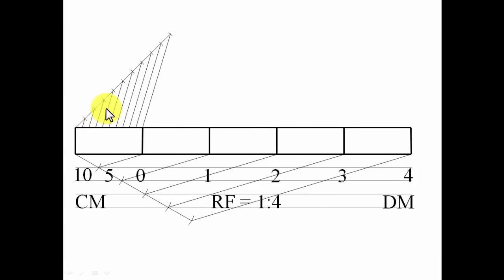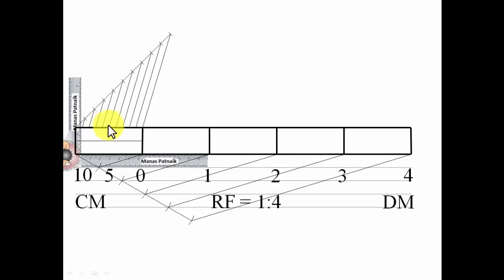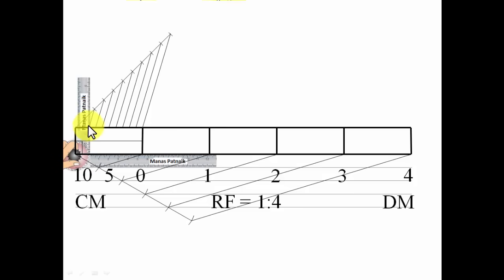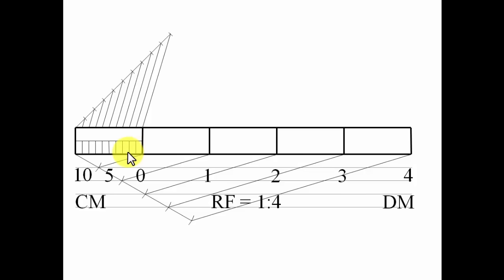Now I'll shift the intersection points and draw lines at a height of five millimeters, moving the drafter from point to point and drawing a line at each one. Repeating this process for all 10 markings gives the subdivisions. This small portion represents one centimeter, the next represents two centimeters, and continuing along you get five and then 10 centimeters.